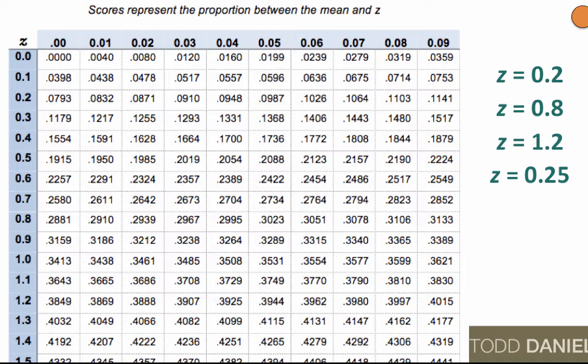So let's practice. What is the proportion of scores between the mean and z of 0.25? We start with the z-score for 0.2. Then we move right to the column labeled 0.05. The value that we find is 0.0987.